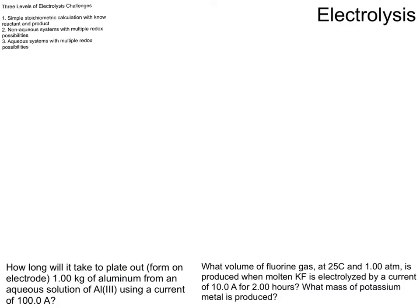If we have an aqueous solution of aluminum plus three, we're going to use a current of 100 amps. So we're introducing the idea of current, and we'll see how current factors into our stoichiometric calculation that we're going to do.